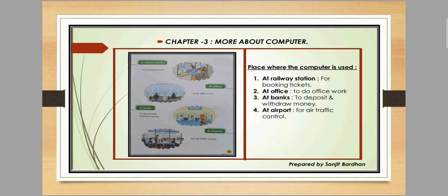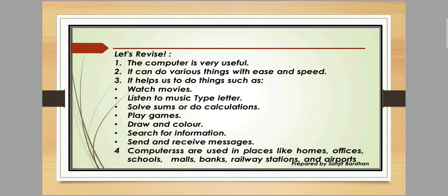Next is at banks — to deposit and withdraw money. We use the computer to deposit money in the bank, and we can also withdraw money. The ATM is also a computer system. Next is at the airport — for air traffic control. The computer is used to control air traffic.